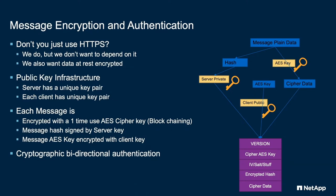The only entity that can decrypt the message is the client itself. If somebody intercepts it, we don't care — it can't be used by anybody. The client knows it's from the server because it's got the hash of the message signed by the server's private key, so they can decrypt the hash and confirm it matches the plaintext. For those interested in the numbers, we're using RSA 2048 and AES 256 keys. The version header allows the encryption scheme to be modernized over time — for example, switching to elliptic curve key pairs instead of RSA.